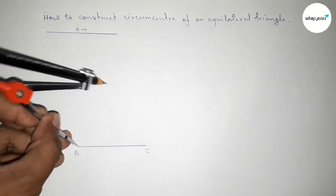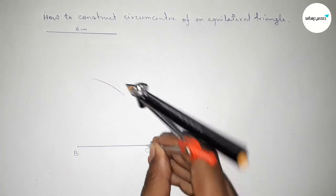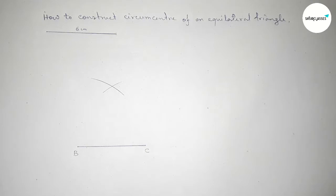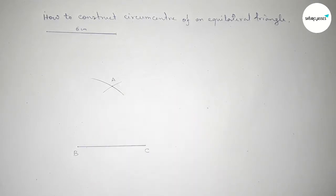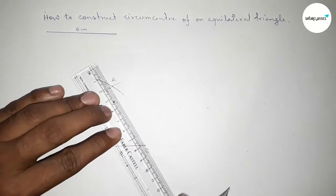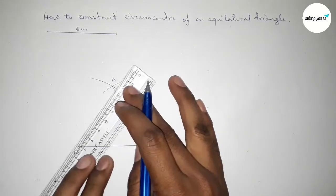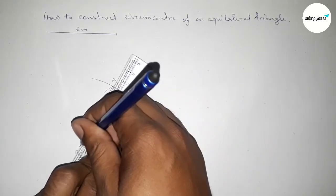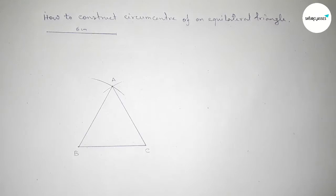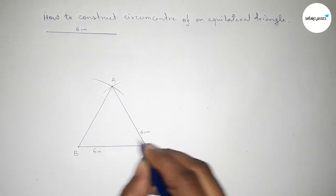Putting the compass at B and drawing an arc, then putting the compass at C and cutting here so both curves intersect at point A. Now joining A to C, then joining A to B. So this is an equilateral triangle with each side six centimeters.